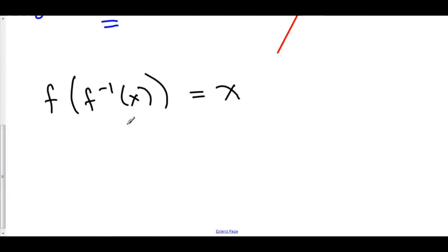Let's take the derivative of this right here. Here we have f of stuff. We're going to have to use chain rule. The derivative of f of stuff is f prime of stuff times the derivative of the stuff. And the stuff here is f inverse. And now this is all equal to the derivative of x which is 1.